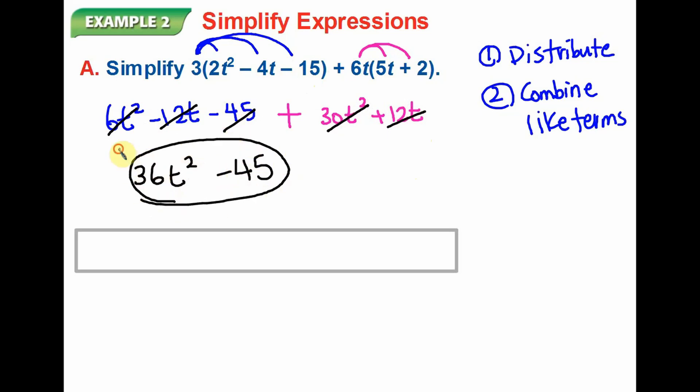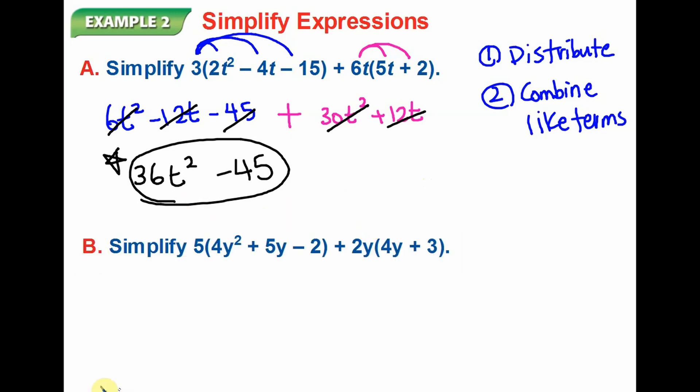Second example, one more time. If I distribute first in order to multiply, 5 times 4y squared is 20y squared. 5 times positive 5y is 25y. 5 times negative 2 will be negative 10. The second term, I will be separating them so that I don't get confused. 2y times 4y will become 8y to the second power. 2y times 3, I will get 6y. If I look at the symbol in between, it's addition.